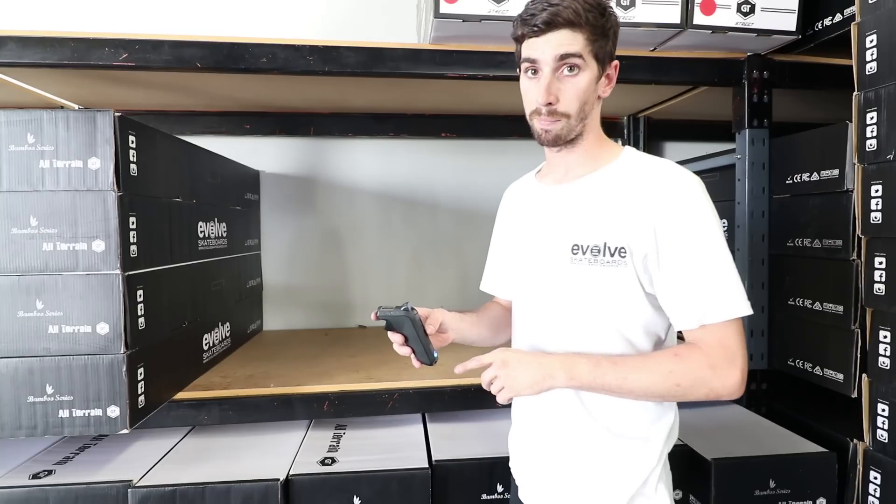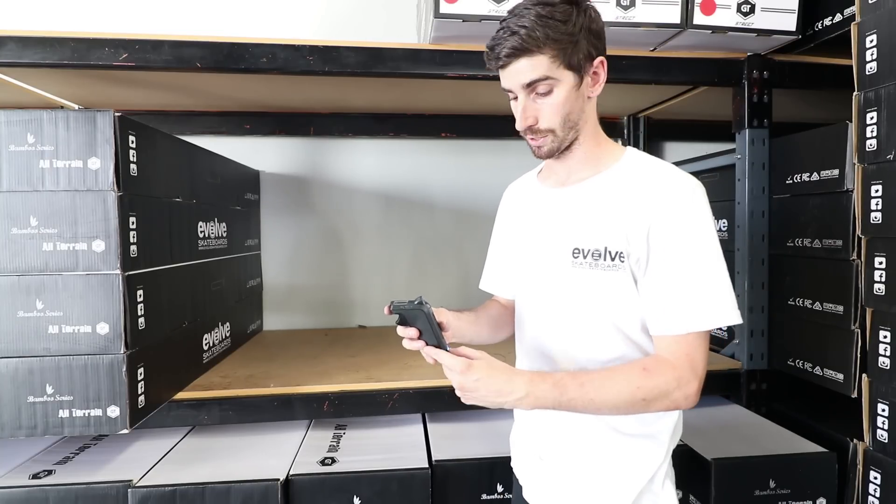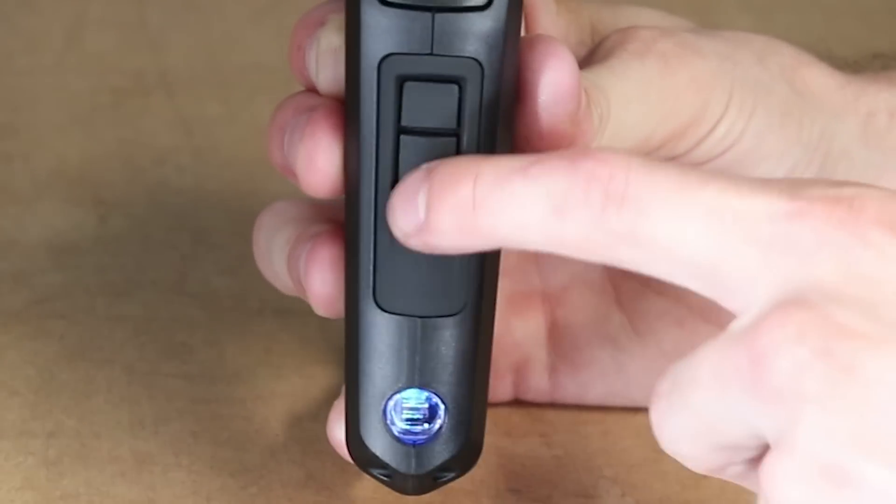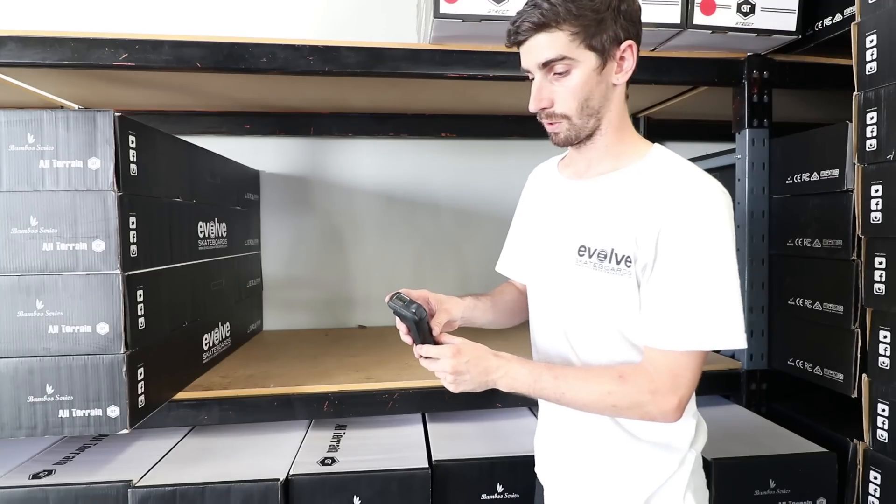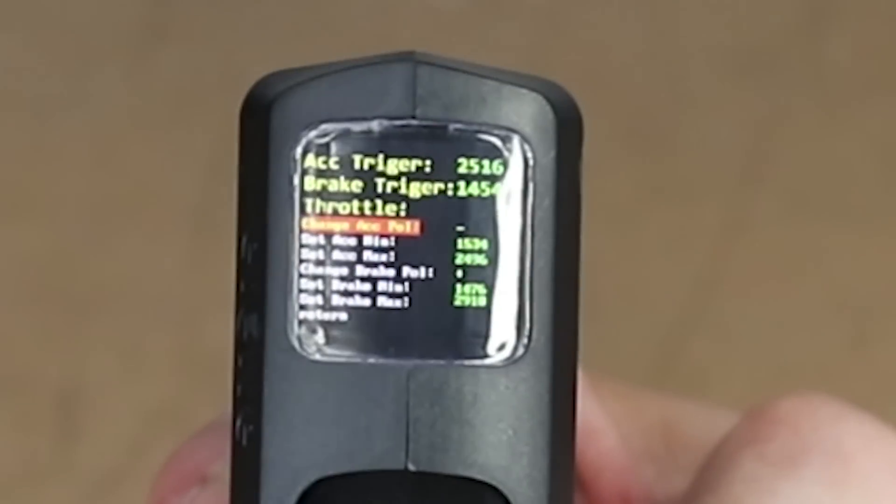So we want to double tap the power button and then double tap the mode 2 button twice. Now we're in our trigger value setting screen to set accelerator to minimum.